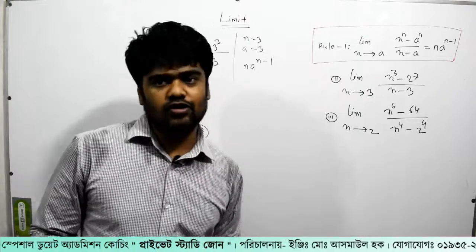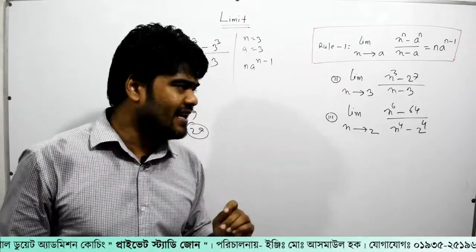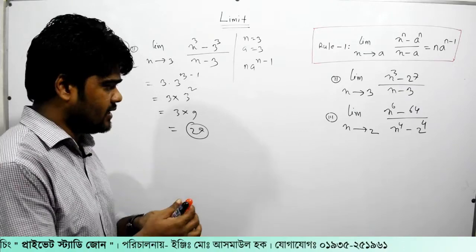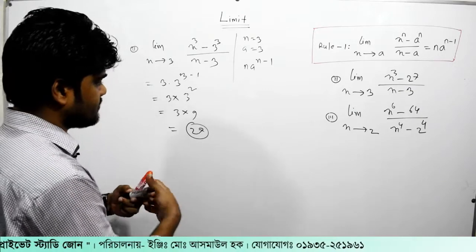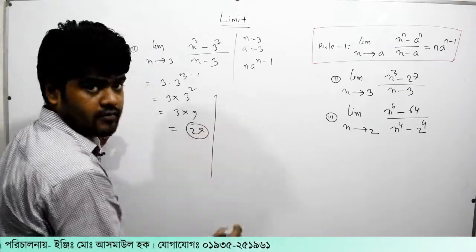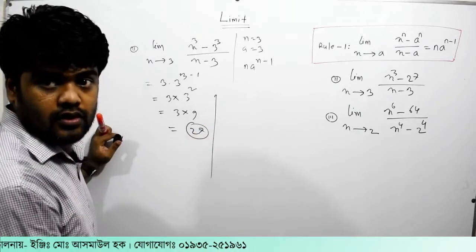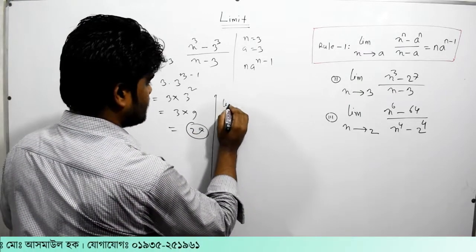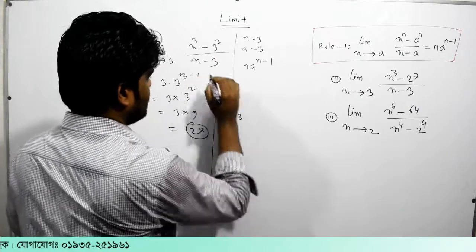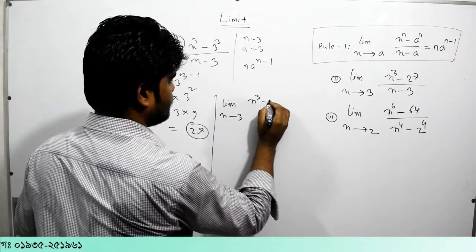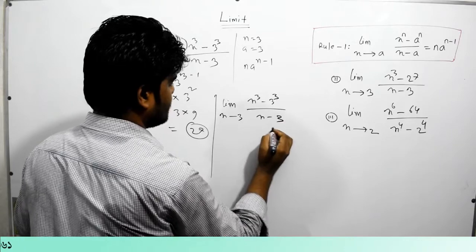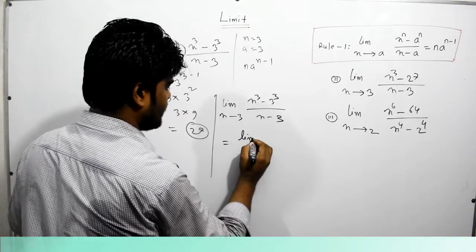I have to say that this idea is a limit — x extends to 3 — of x cubed minus 3 cubed, divided by x minus 3. We are going to work through this problem.